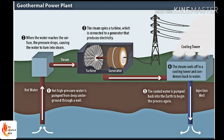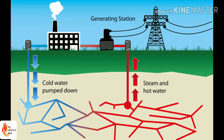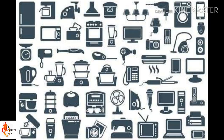Geothermal energy uses the internal heat of the Earth's crust to produce electricity. Steam is generated by sending water through pipes to high-temperature regions underground. This steam is then brought to the surface and used to rotate the turbines of power plants.